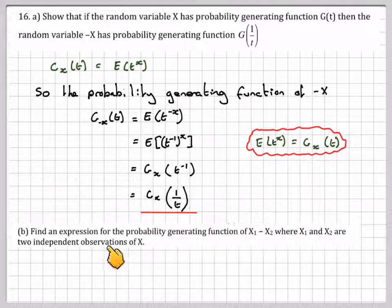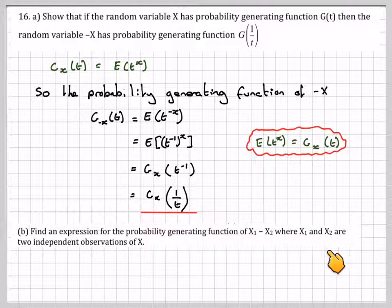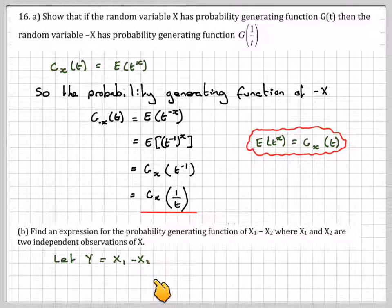Find an expression for the probability generating function of X1 minus X2, where X1 and X2 are two independent observations of X. Let Y = X1 - X2.